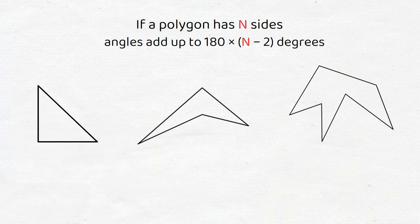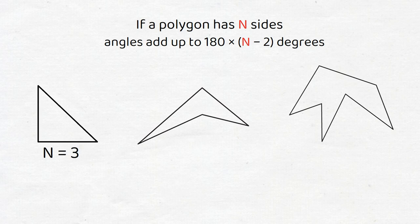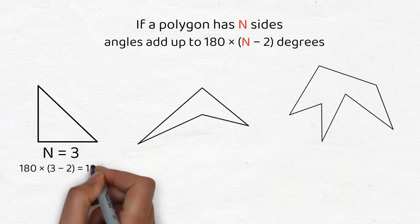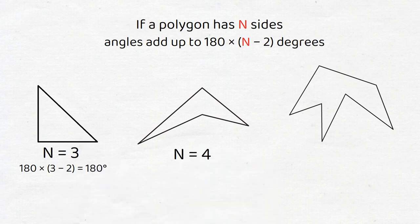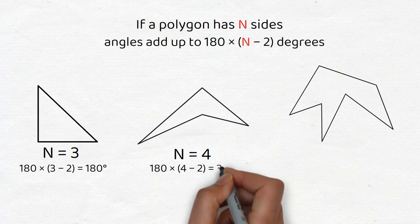A triangle, for example, is a polygon with 3 sides, so n = 3, and hence its angle sum adds to 180 × (3 - 2), which is 180. A quadrilateral is a polygon with 4 sides, n = 4, so that its angle sum will be 180 × (4 - 2), or 360 degrees.